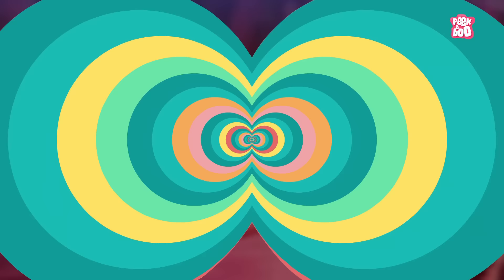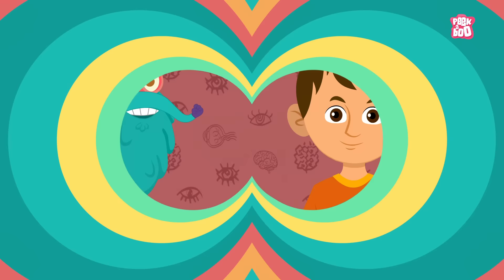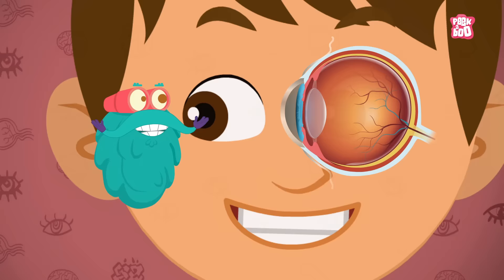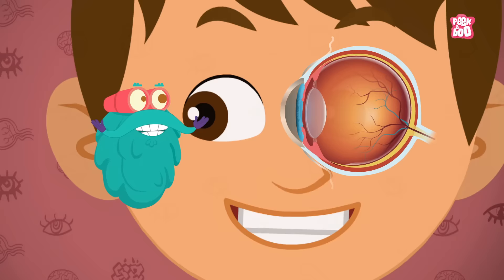Amazing, isn't it? Trivia time! On an average, a person blinks 17 times in a minute. An eye is composed of more than 2 million working parts.